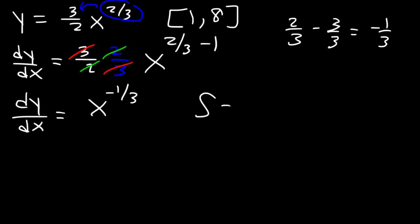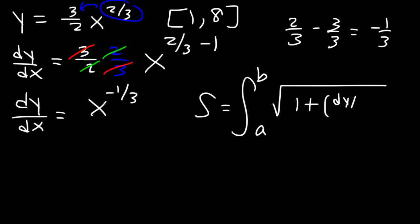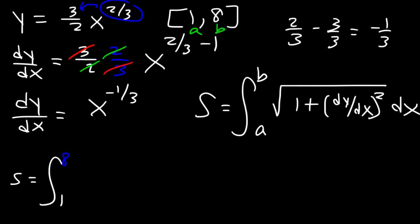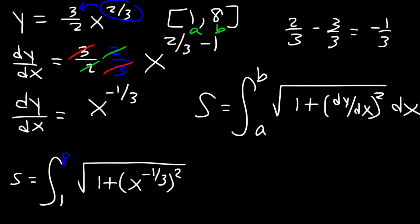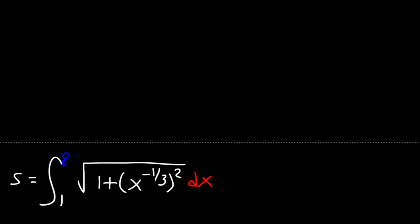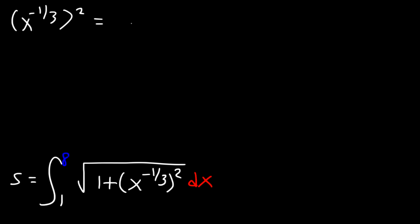Using the formula, arc length equals the integration from a to b of the square root of 1 plus dy over dx squared times dx. We can see that a is 1 and b is 8. So the arc length is the integration from 1 to 8 of the square root of 1 plus x to the negative 1 third squared times dx. Now let's square x to the negative 1 third: whenever you raise one exponent to another power, multiply the two exponents. Negative 1 third times 2 is negative 2 thirds.